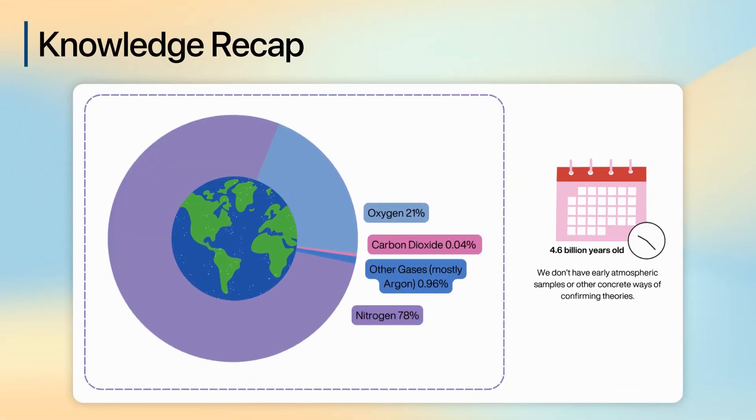So far, we've discussed Earth's current atmospheric composition and briefly looked at why it's hard to be sure about the composition of the early atmosphere. Let's now build on this foundation by looking at the evidence and explanations of what the early atmosphere might have been like.